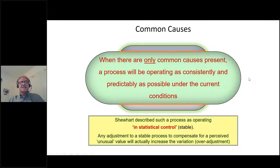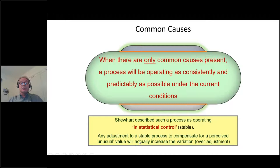An important summary of common causes — as Shewhart determined: when there are only common causes present, a process will be operating as consistently and predictably as possible under the current conditions and design of that process. Shewhart described such a process as operating in statistical control, often referred to simply as being stable. Any adjustment to a stable process to compensate for a perceived unusual value will actually increase the variation — this is over-adjustment.